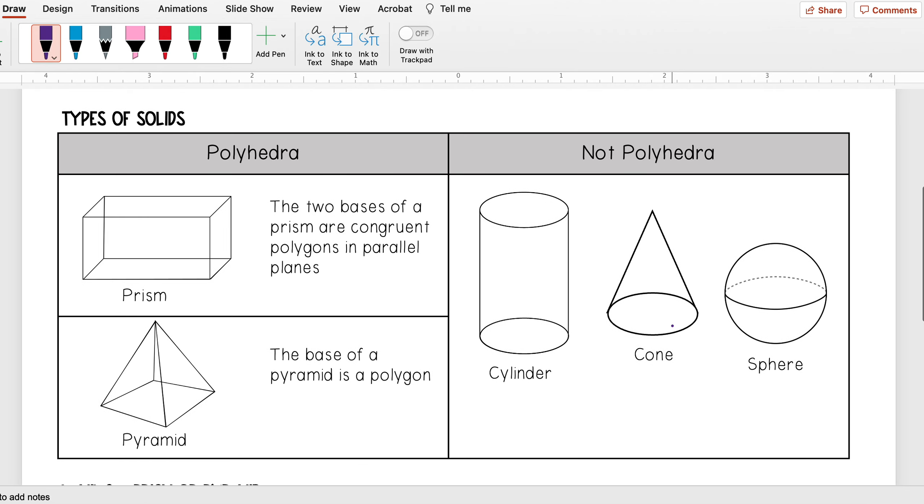And so we have two different types of solids that we'll be talking about today. The first one are polyhedra, and there are two types of polyhedra that we see.